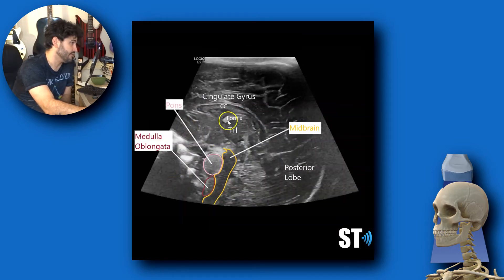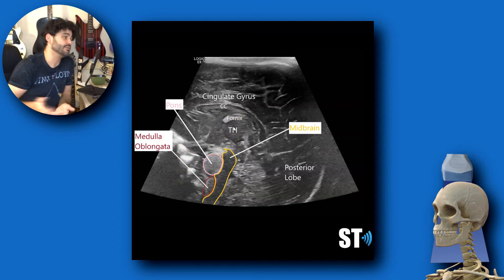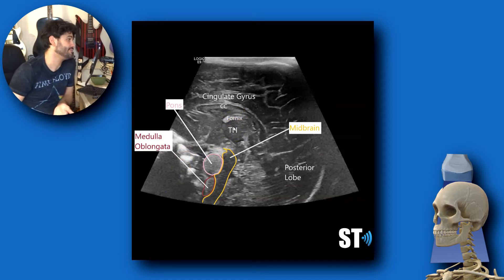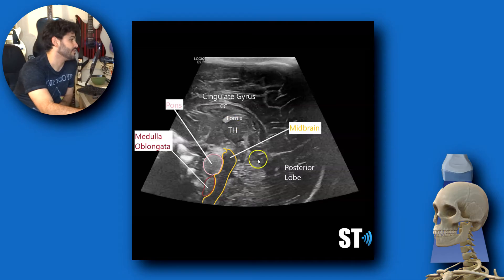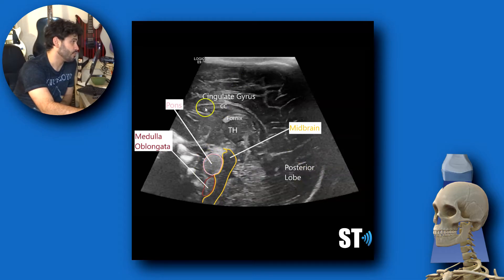Here's another view. You've got the fornix, thalamus or thalamic adhesion — also called the massa intermedia — which is pretty much the midline of the thalamus connecting both hemispheres. Then you've got your midbrain, pons, medulla oblongata. Again, this is the posterior part of the brain, corpus callosum, and the cingulate gyrus.